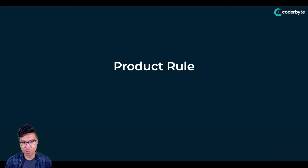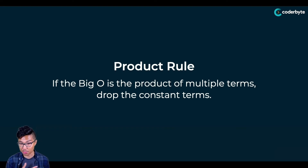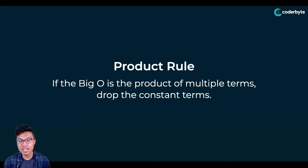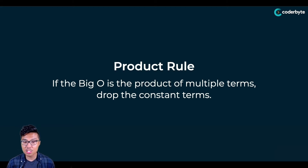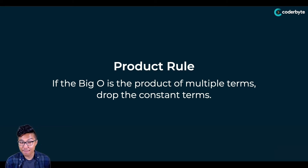Looking at our very first rule, I'll define what I call the product rule. To practice this product rule, we don't need to look at code — I can just give you some unsimplified Big O notation and we'll simplify it together. For the product rule, if the Big O is the product — meaning a multiplication of multiple terms — we can drop the constant terms. Constant terms are static numbers like 1 or 45, basically anything that's not a variable.